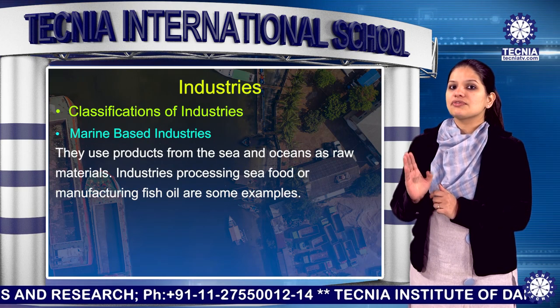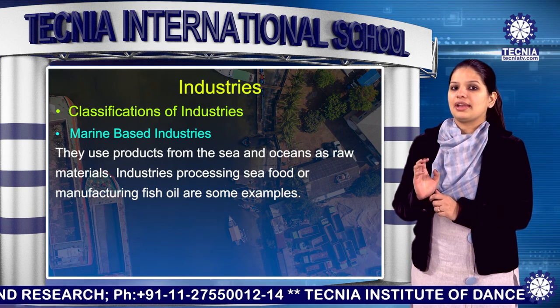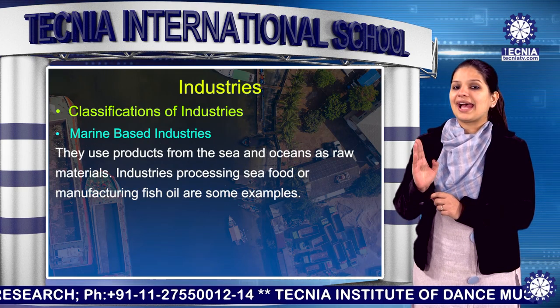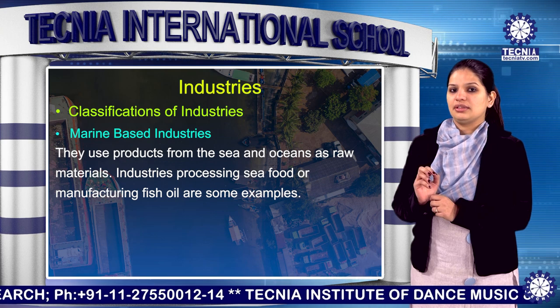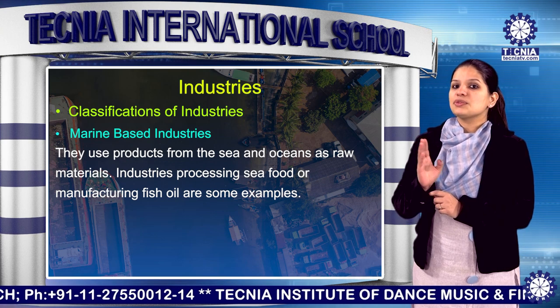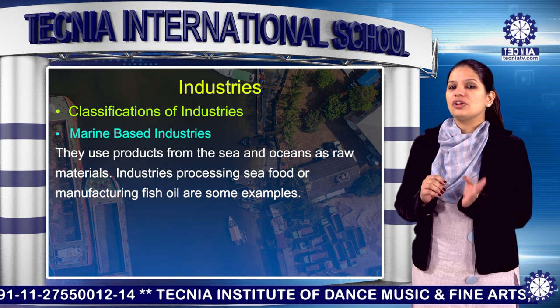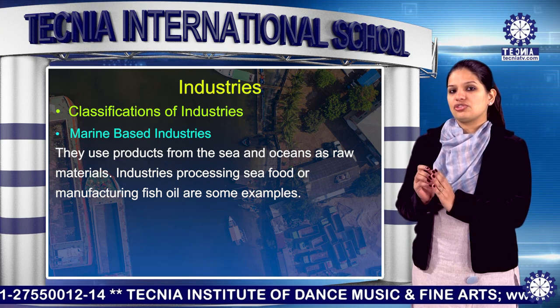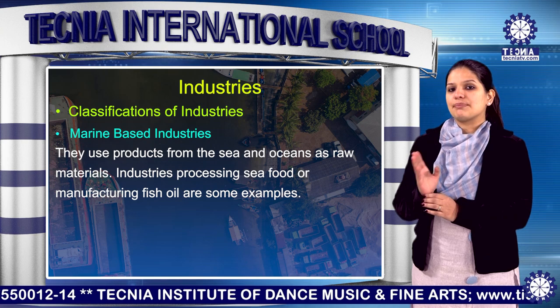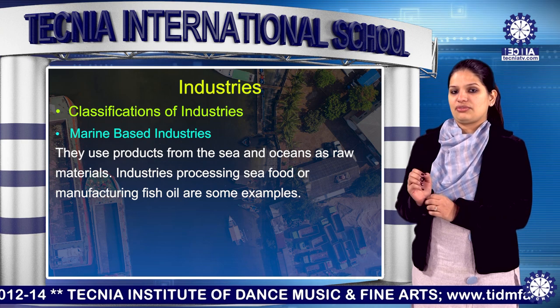Third is marine-based industries. They use products from the sea and oceans as raw material. Industries processing seafood or manufacturing fish oil are examples of such industries.